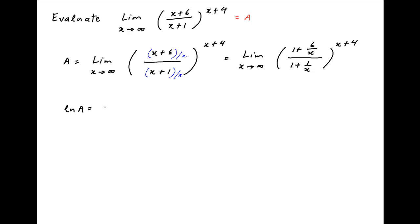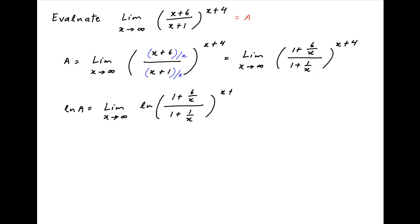Now take the log of both sides. Therefore, ln a is equal to the limit as x tends to infinity of ln of (1 plus 6 upon x) divided by (1 plus 1 upon x), whole raised to the power (x plus 4).